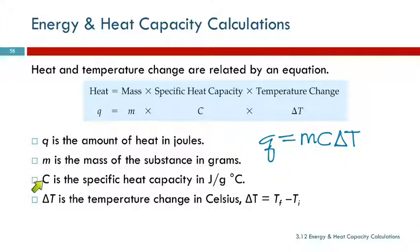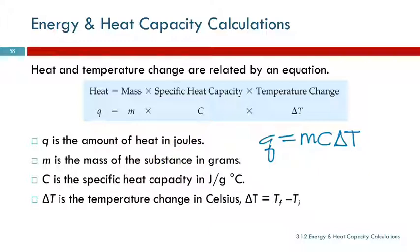C is the specific heat capacity — that's usually going to be in joules per gram degree Celsius. M is the mass of the substance, measured in grams. And Q is the amount of heat in joules.